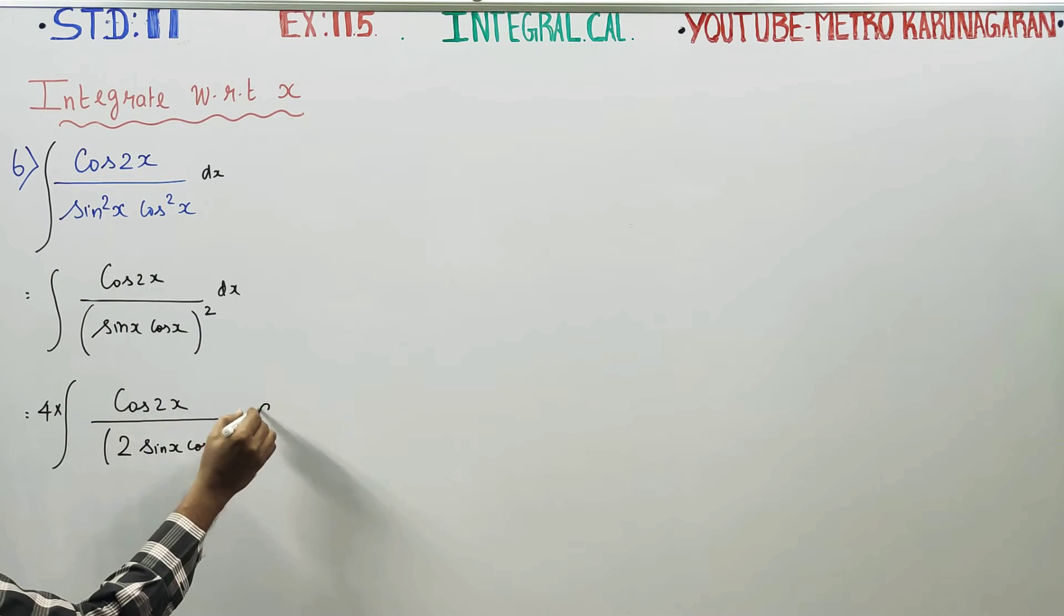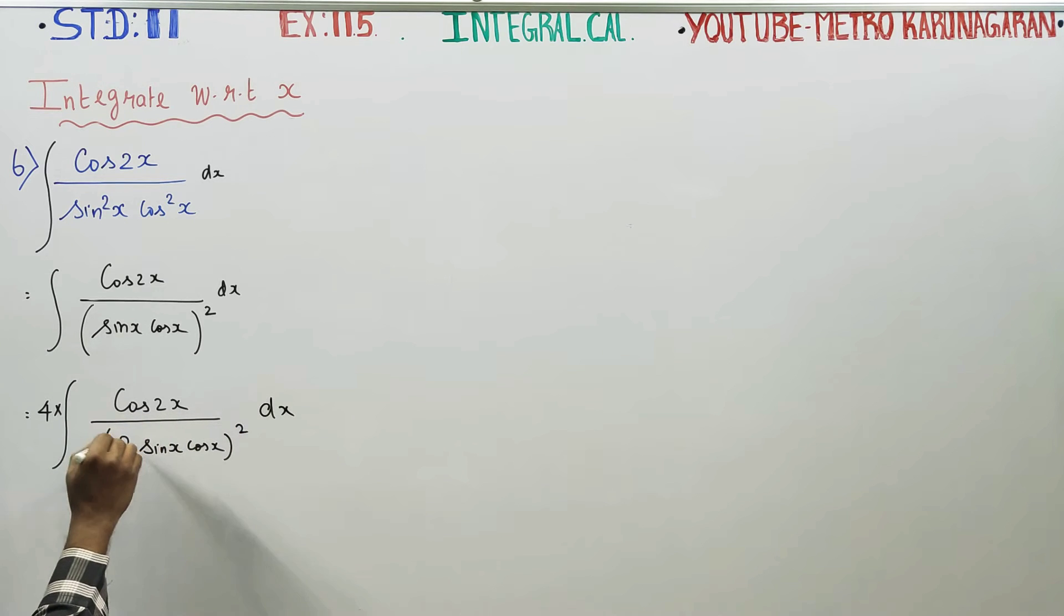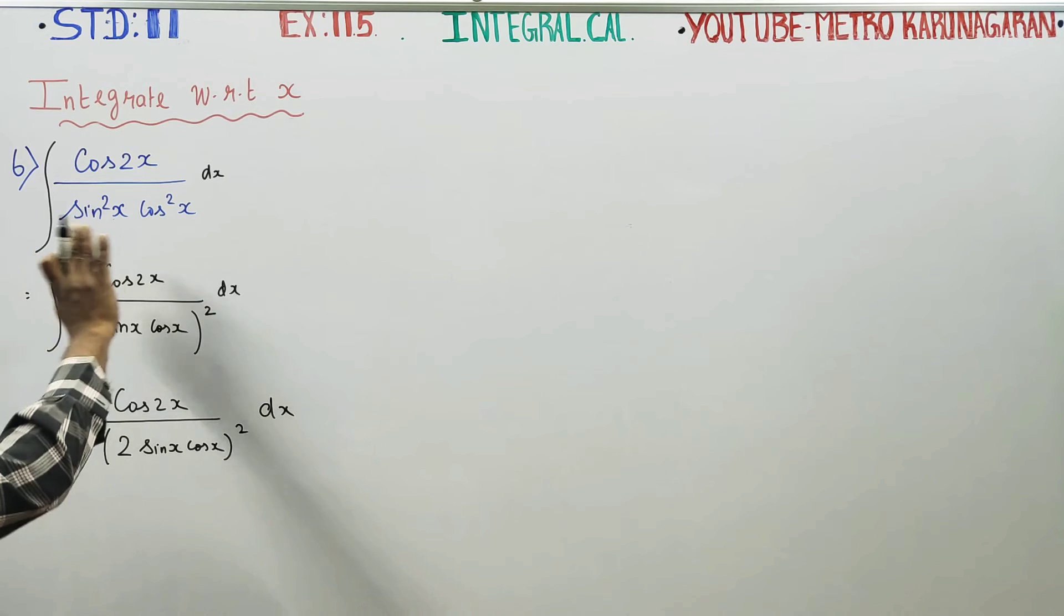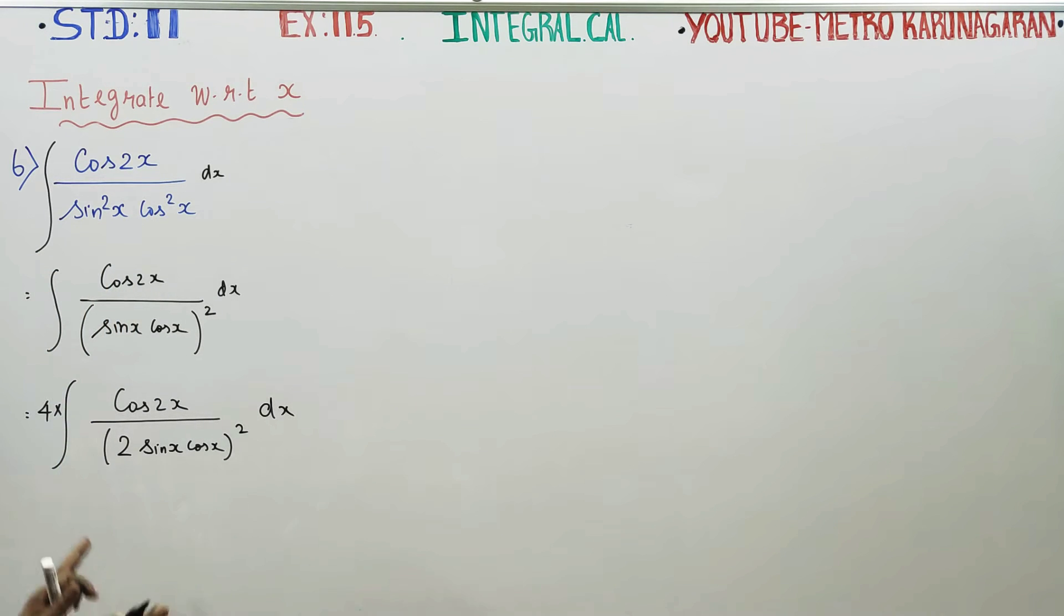If you simplify the sum and apply the whole square, 2 square will become 4. Multiply and divide by 4, and the 4s will cancel out appropriately. Sin square x, cos square x apply the same way. I am just changing the style of the sum.